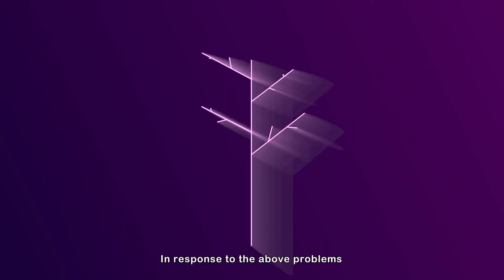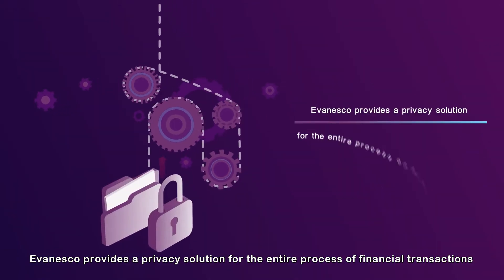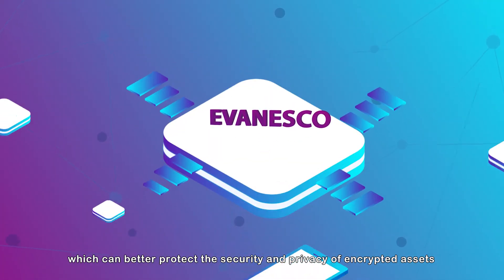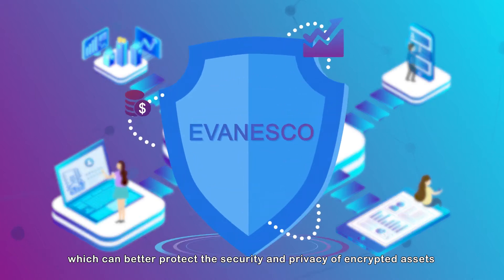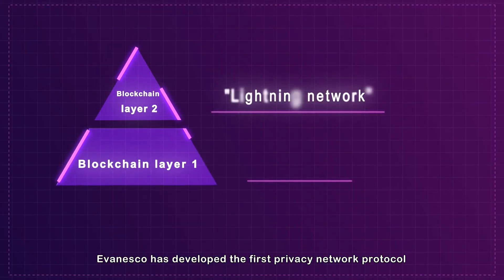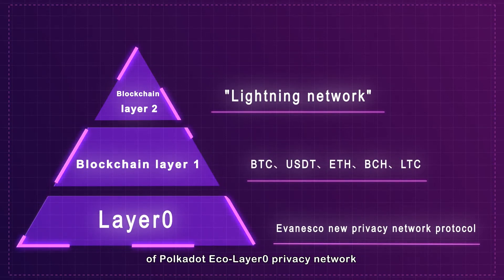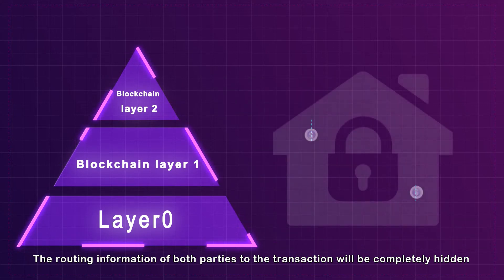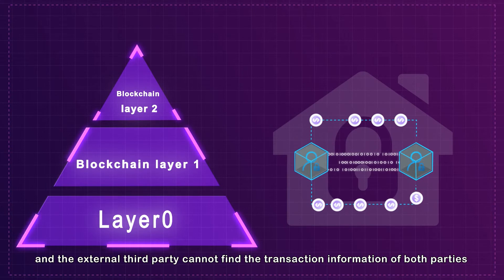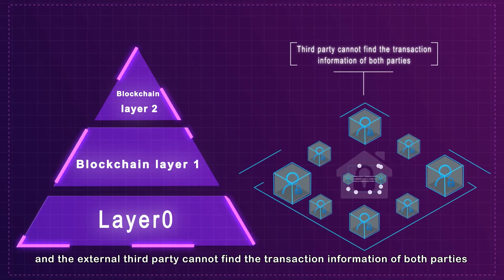In response to the above problems, Evanesco provides a privacy solution for the entire process of financial transactions, which can better protect the security and privacy of encrypted assets. Evanesco has developed the first privacy network protocol of Polkadot Ecolayer Zero Privacy Network, where the routing information of both parties to the transaction will be completely hidden, and external third parties cannot find the transaction information of both parties.